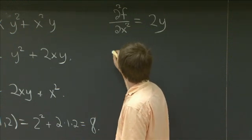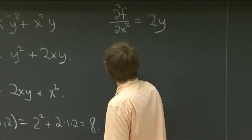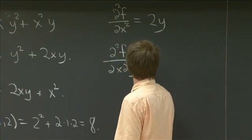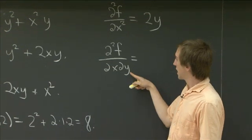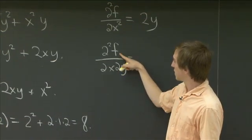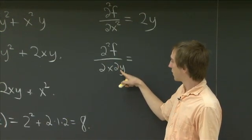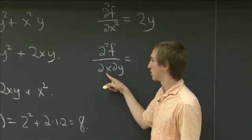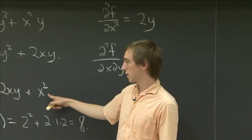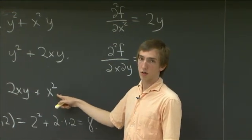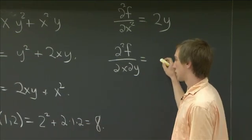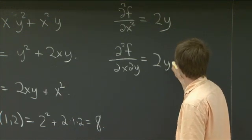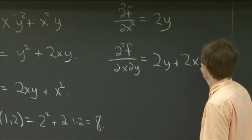And now, we can also take mixed partials. So here, we take a derivative of f, first we take the derivative in the y direction, and then we take a derivative of that in the x direction. So we can look at our derivative here, ∂f/∂y, and we need to take its partial in the x direction. And so we get 2y plus 2x.